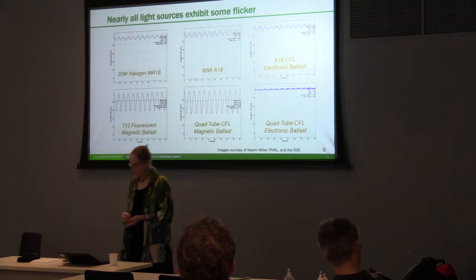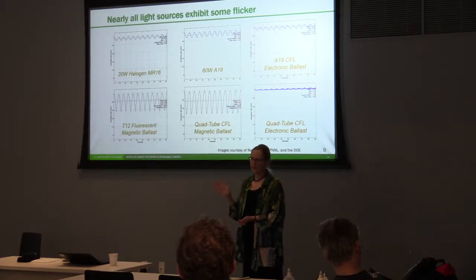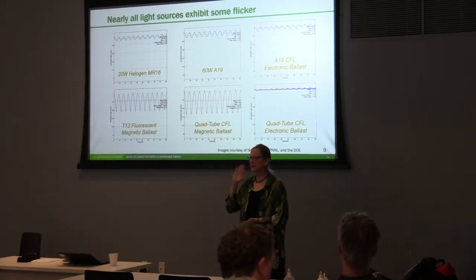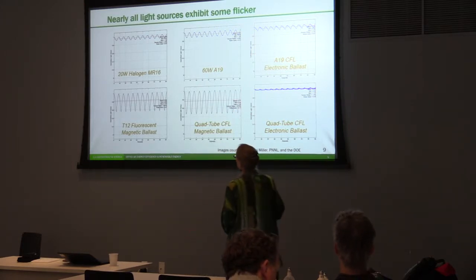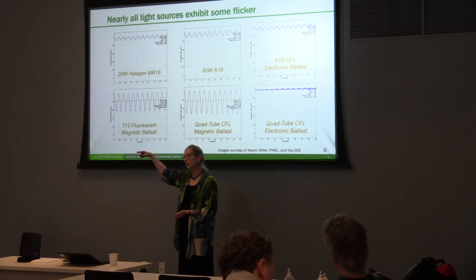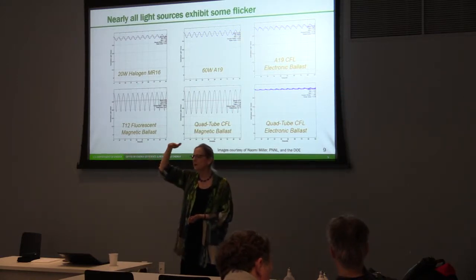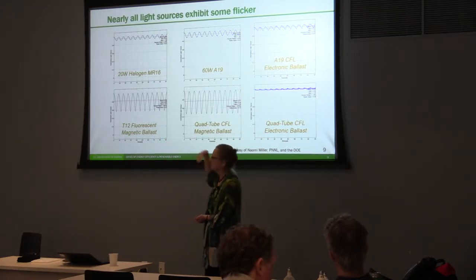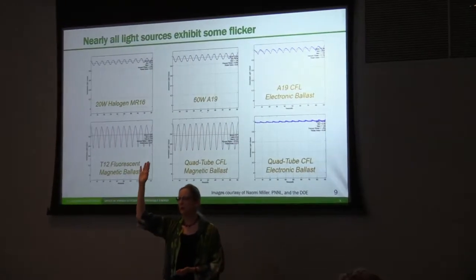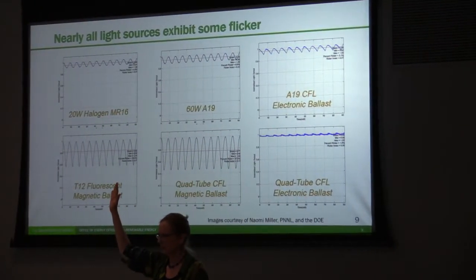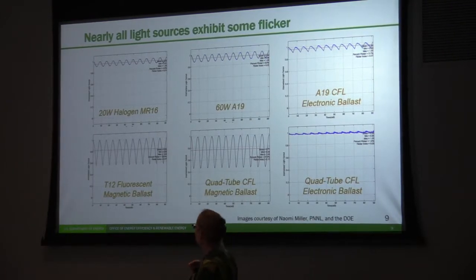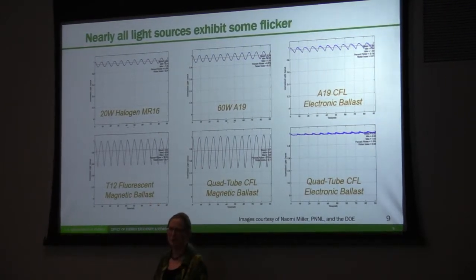Why is it relevant? Almost all light sources emit some level of flicker, so flicker is not necessarily bad. However, depending on the degree and frequency, it can be bad. For example, a classic halogen MR-16 has a little 120 Hz ripple on top of its light output — the light is very steady, oscillating by about 6%. Old magnetically ballasted fluorescent fixtures produced about 27–28% flicker — that's what everybody hated. So that's a baseline we want to be better than.